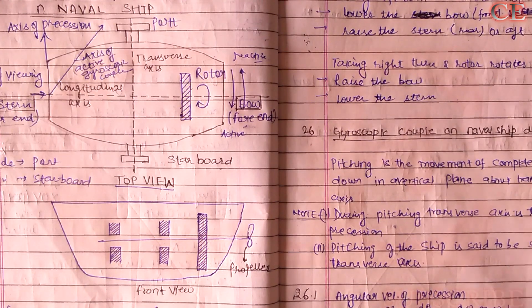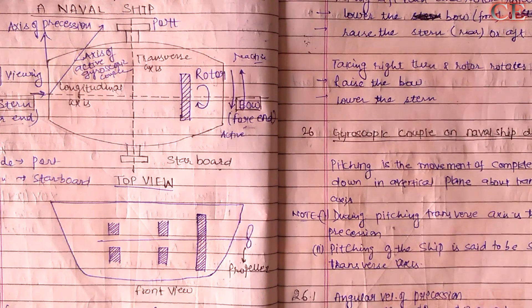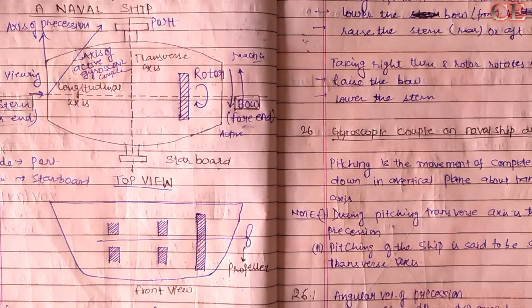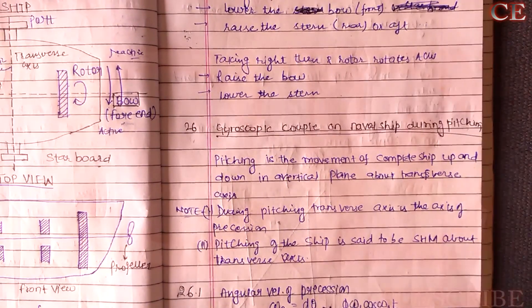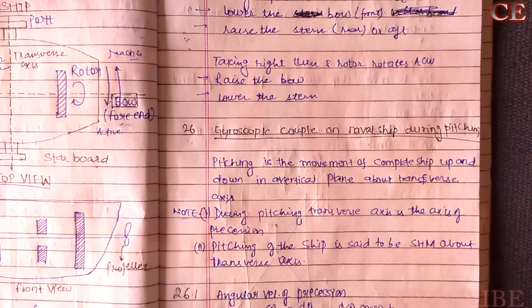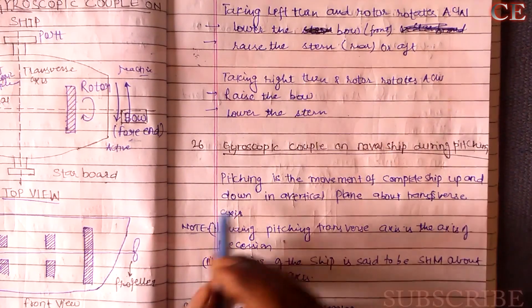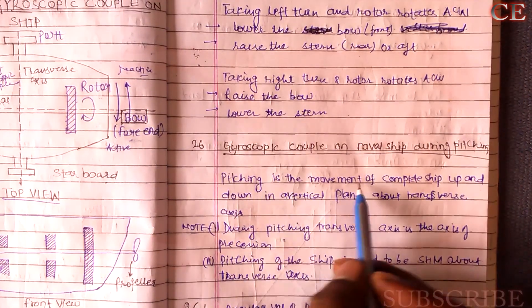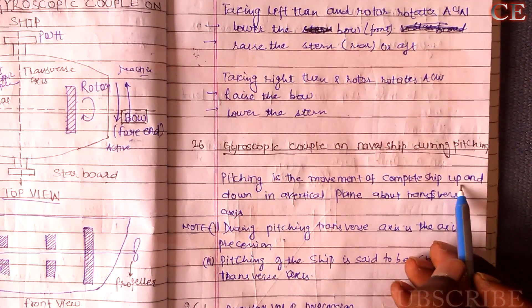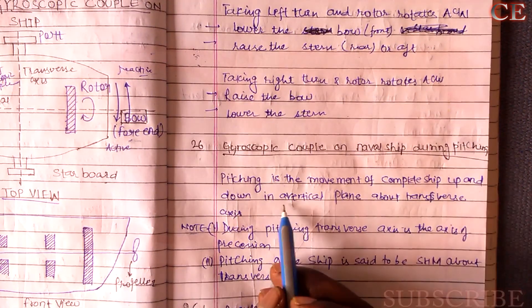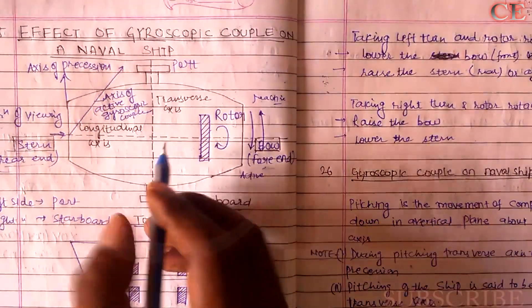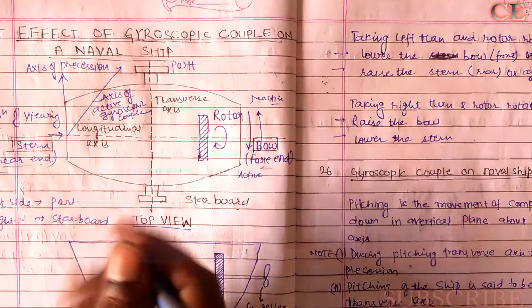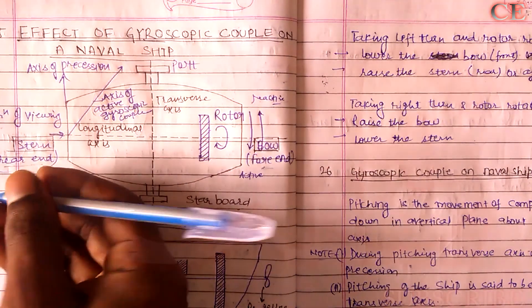Now here comes the important part of the video. We will talk about the gyroscopic couple on a naval ship during pitching. Pitching is the movement of the complete ship up and down in a vertical plane about the transverse axis. The transverse axis is the axis about which the ship pitches — it goes up and down.